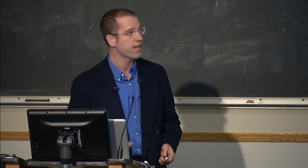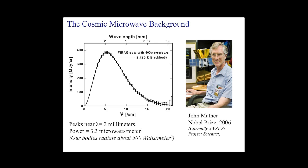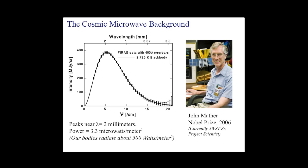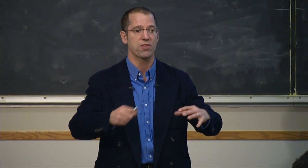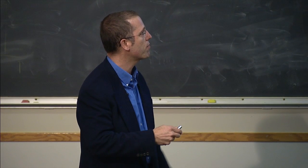As Glenn talked about last week, the cosmic microwave background is this leftover radiation or light from the Big Bang. Today we can measure its spectrum — the intensity as a function of wavelength. This was done fantastically by a satellite called COBE and a particular instrument called FIRAS. The PI of that instrument was John Mather, who got the Nobel Prize for showing that the microwave background was a perfect black body. This tells us that the early universe had to be in thermal equilibrium — everything was at the same temperature. That's pretty amazing.